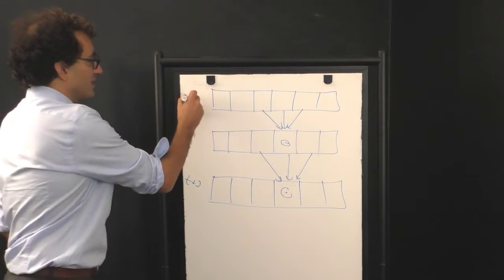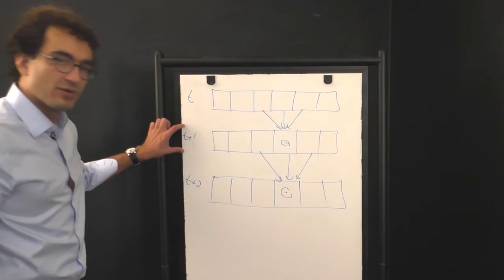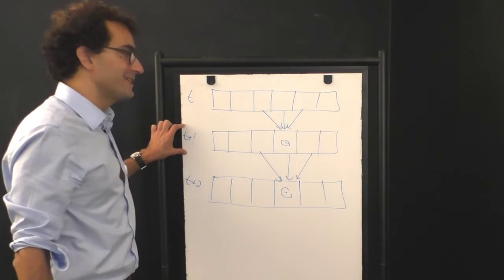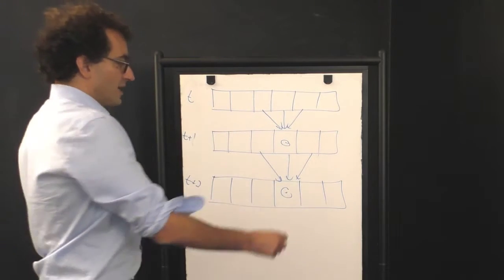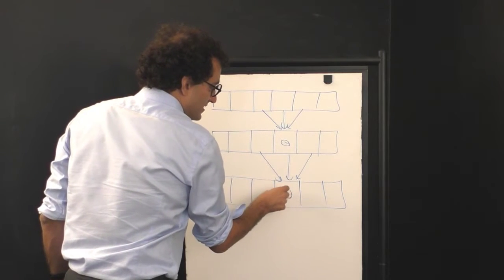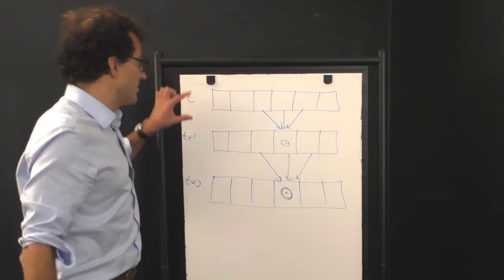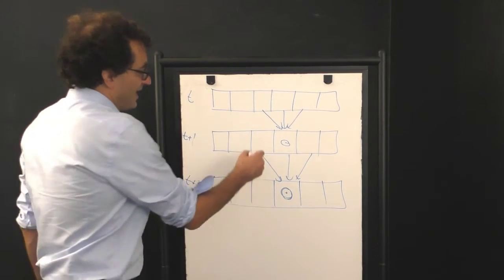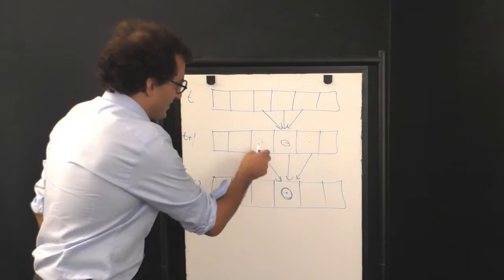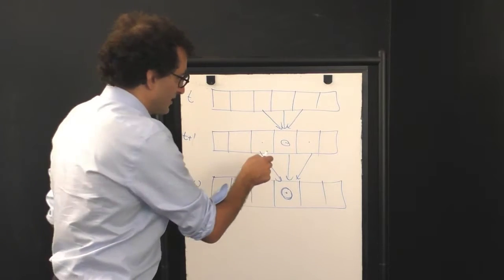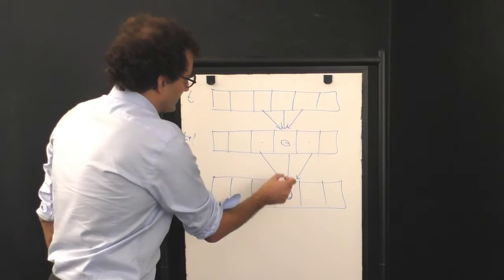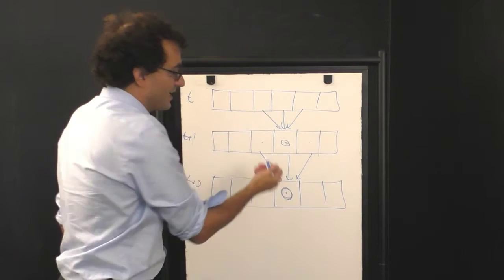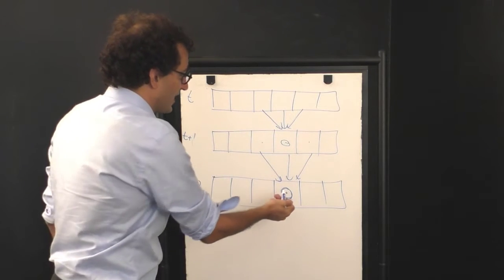But imagine that we dropped, we coarse grained, we decimated out the t plus one data. What do you have to know about the state of the system here to know the value of this point here? And as Ian Classy, one of the people I learned this technique from, once said, this is sort of like what a physicist would call a light cone.